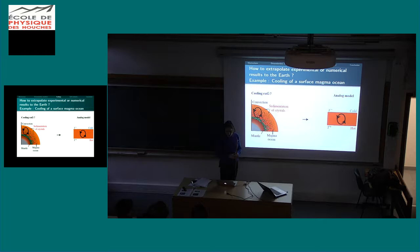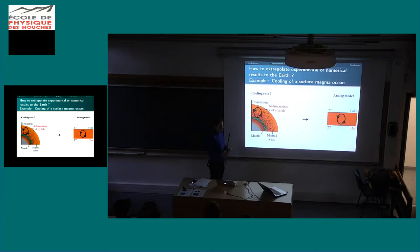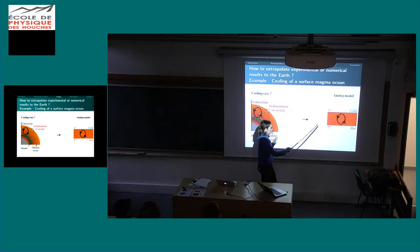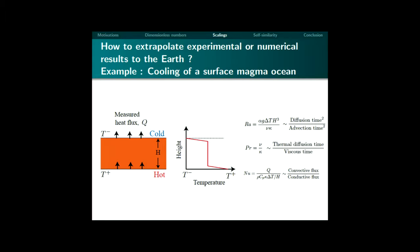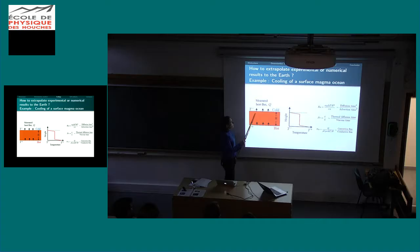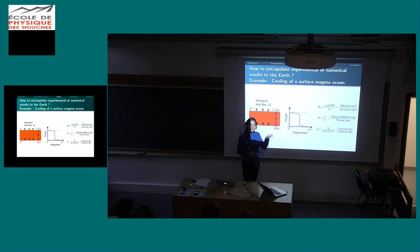Because that's how you can extrapolate your experiment or your simulations to the Earth. To illustrate that point, I'm going to take the example of the cooling of a magma ocean in terms of orders of magnitude. If you wanted to know what is the timescale for the cooling of a fully liquid magma ocean — the one which is not very viscous — the question we ask is: what is the heat flux that goes away from this system? Because if we can estimate the heat flux, we will be able to say something about the cooling rates of the magma ocean.